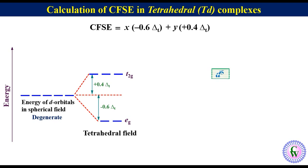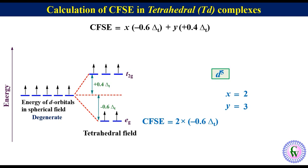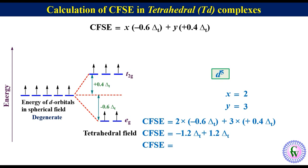If there are 5 D-electrons in the metal ion, in a spherical field environment all 5 electrons will be here. In tetrahedral field, two electrons will be in eg orbitals and the remaining three will be in t2g. So in D5 tetrahedral complexes, x is equal to 2 and y is equal to 3. CFSE will be 2 into minus 0.6 delta-t plus 3 into 0.4 delta-t, giving minus 1.2 delta-t plus 1.2 delta-t. Thus CFSE will be equal to 0.